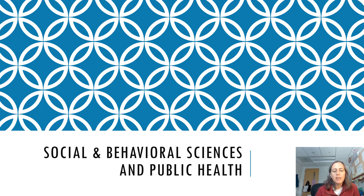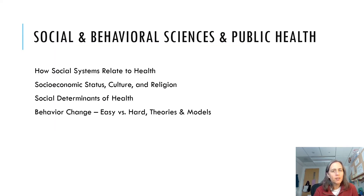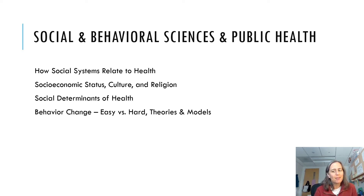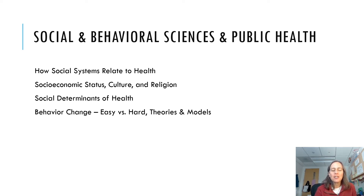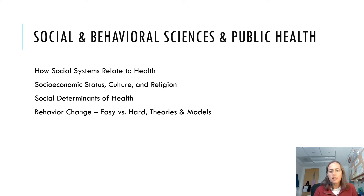Moving into Unit 4, Social and Behavioral Sciences and Public Health. You might be relieved to know that I'm not going to ask you to read the entire chapter this time because it gets into some things that we just don't really have time to do justice to, but I highly recommend reading them in your spare time. We're going to focus on how social systems relate to health, the impact of socioeconomic status, culture and religion on health, the social determinants of health, and a little bit about behavior change — what makes things easy versus difficult to change, some theories and models, and tips and tricks to encourage healthier behaviors.